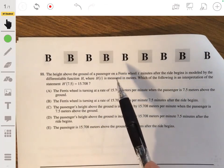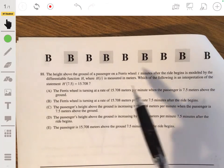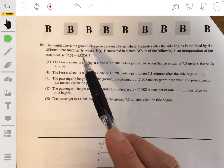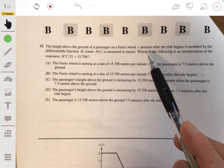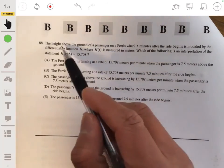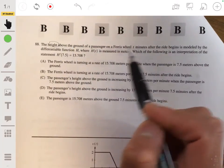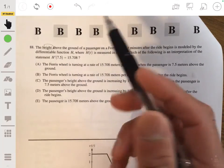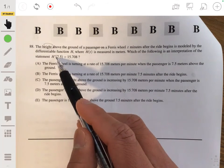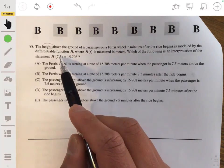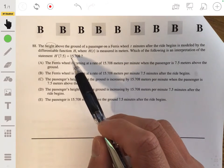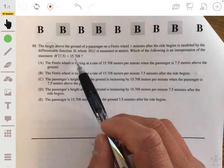88 is the height above the ground of the passenger on a Ferris wheel t minutes after the ride begins is modeled by the differentiable function h where h of t is measured in meters. Which of the following is an interpretation of the statement h prime of 7.5 equals 15.708. Okay, so h of t tells you the height above the ground of a passenger at some time t. So h prime of t would tell you how the height is changing, how the height above the ground is changing at that time.